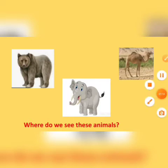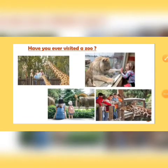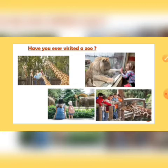Children, have you ever visited a zoo? Yes, you must have visited a zoo. Now tell me, what is a zoo? A zoo is a place where different types of animals are kept. Children love to go to the zoo, isn't it? But when we go to the zoo, we should be very careful about our behavior towards the animals.